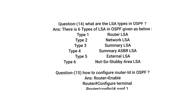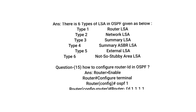Question: What are the LSA types in OSPF? Answer: There are 6 types of LSA in OSPF. Type 1: Router LSA. Type 2: Network LSA. Type 3: Summary LSA. Type 4: Summary ASBR LSA. Type 5: External LSA. Type 6: Not-So-Stubby Area LSA.